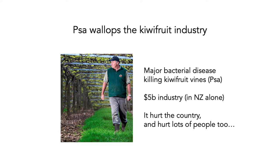Now we're going to look at a different case study: the kiwifruit industry and the role of PSA. PSA is a major bacterial disease that kills off kiwifruit vines, and it became a major problem in New Zealand because the kiwifruit industry is absolutely huge — a $5 billion industry, at the time about the third or fourth largest in New Zealand. This disease had a huge repercussion on the economy and hurt a lot of individual people, spreading incredibly rapidly across kiwifruit-growing parts of the North Island.